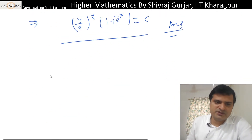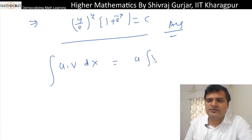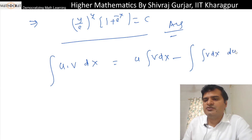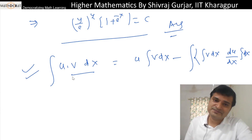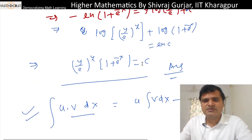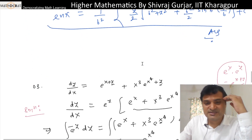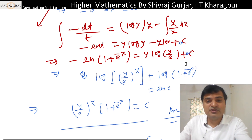We integrate two functions by the integration by parts formula: U·∫V dx minus ∫(dU/dx · ∫V dx) dx. This by-parts formula has also been used directly in questions asked in calculus, including in competitive exams. So this is the variable separable form — the initial stage of ODEs. Next, we will discuss equations which can be reduced to this form.